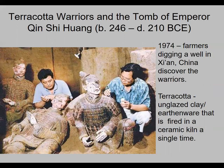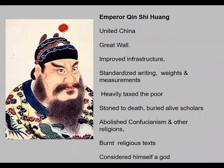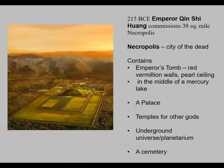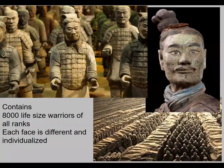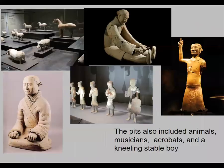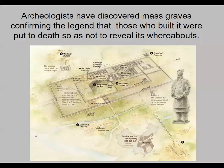The Terracotta Warriors in the tomb of Qin Shi Huang were also originally painted, and each one is individualized — they all look different, though the paint has faded over time. They included everything the king needed in the afterlife, just like the Egyptians.